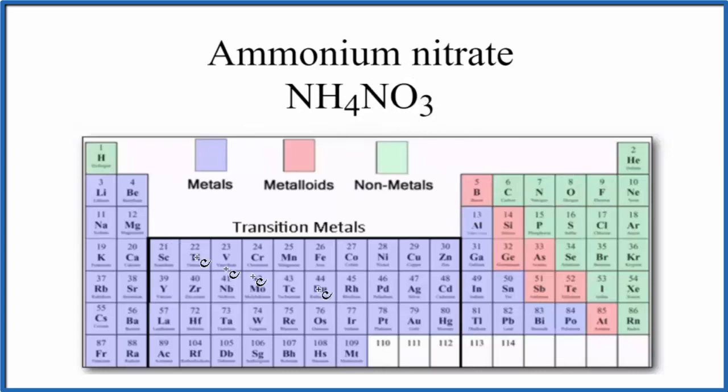As we look at the periodic table, we look at each element in ammonium nitrate. We have the nitrogen, the hydrogen, and then the oxygen. They're all non-metals, so we would think that this would be a covalent or molecular bond.